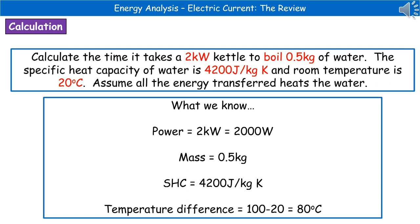First, highlight or jot down the key numbers from the question. Power is 2 kilowatts — remember to convert that into watts by multiplying by a thousand. Mass is 0.5 kilograms. Specific heat capacity is 4200. We also need the temperature difference: we're boiling water starting at 20 degrees Celsius, so 100 minus 20 gives us 80 degrees Celsius.